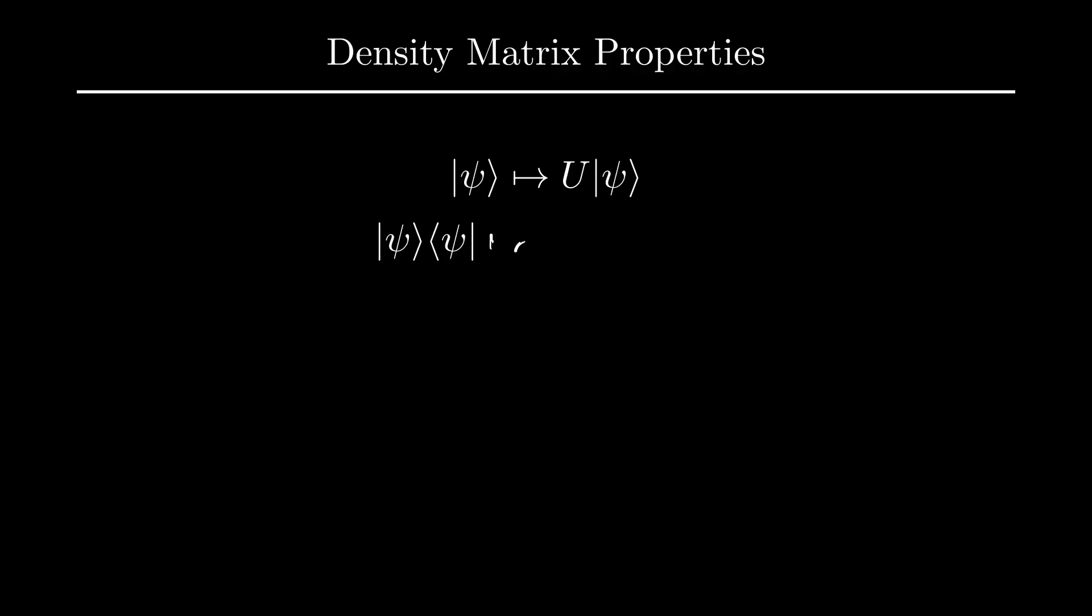For this new pure state, we have that our density matrix would be given as follows. Consequently, we can see that to apply a unitary to a density matrix, we simply conjugate it. In other words, we multiply rho by u on the left and u dagger on the right.